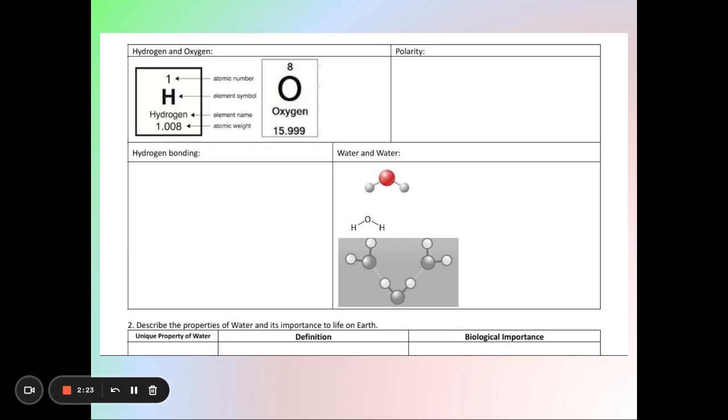And that number equals protons plus neutrons. So you can take that number like 1.008, subtract the number of protons which is 1, and that gives you the number of neutrons in hydrogen. Now that is unless you're dealing with an isotope, so an isotope has a different number of neutrons than what you see on the periodic table.